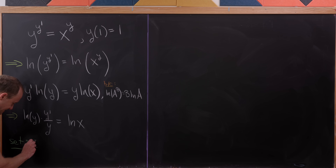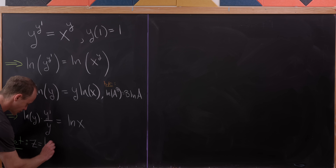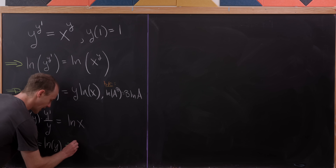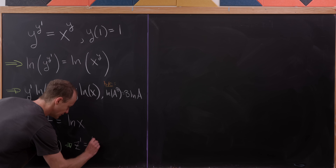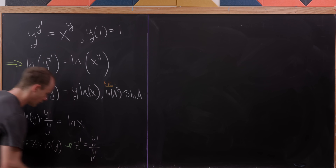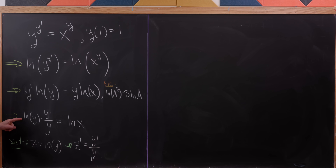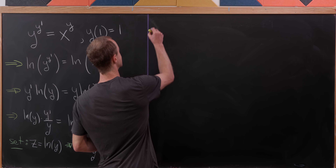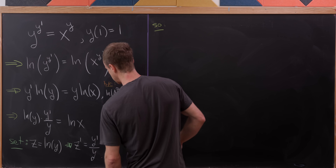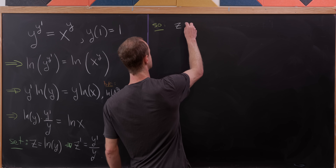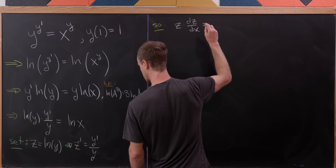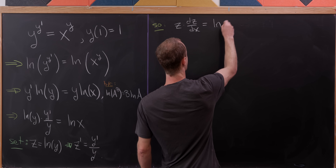Let's set z = ln(y). Then z' = y'/y, which makes the left hand side equal to z · z'. So writing z' as dz/dx, our equation becomes z · (dz/dx) = ln(x).